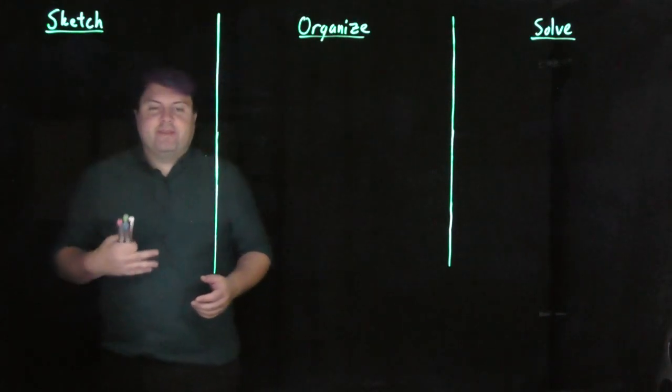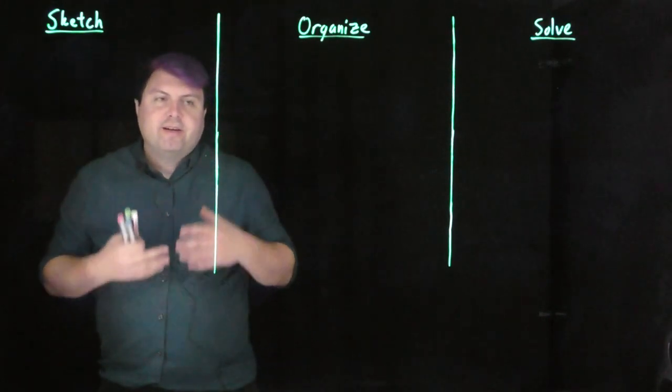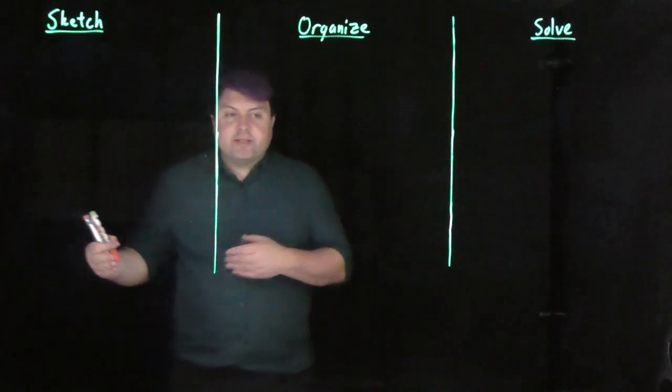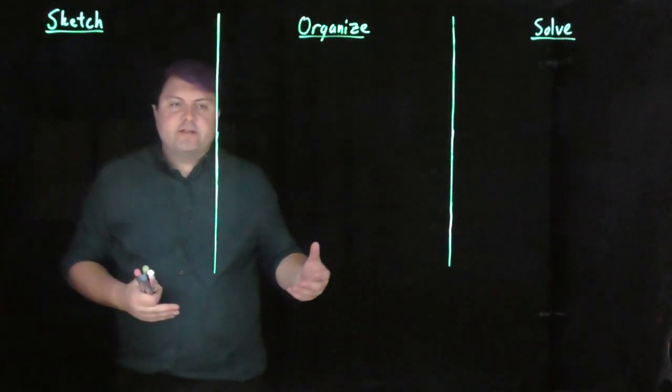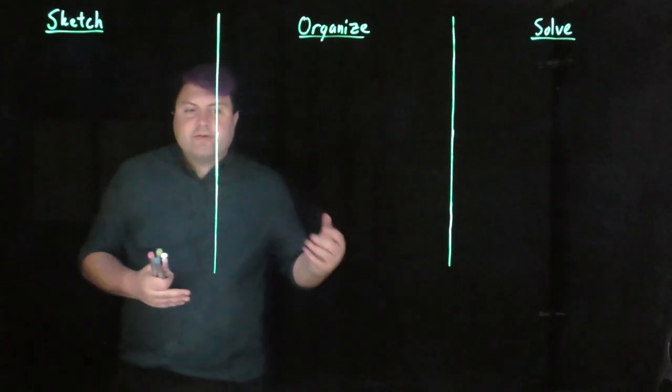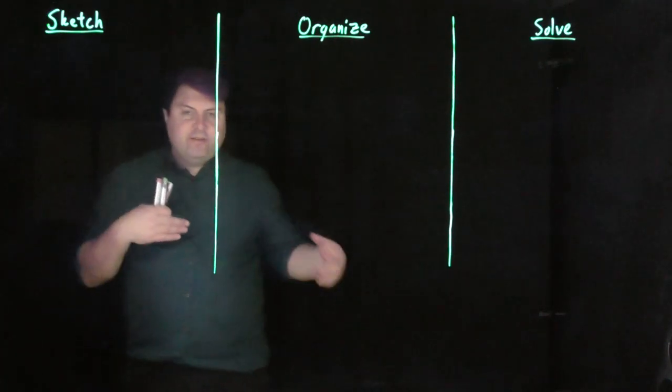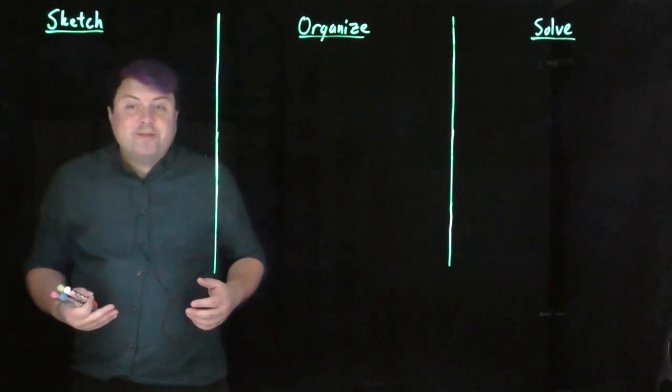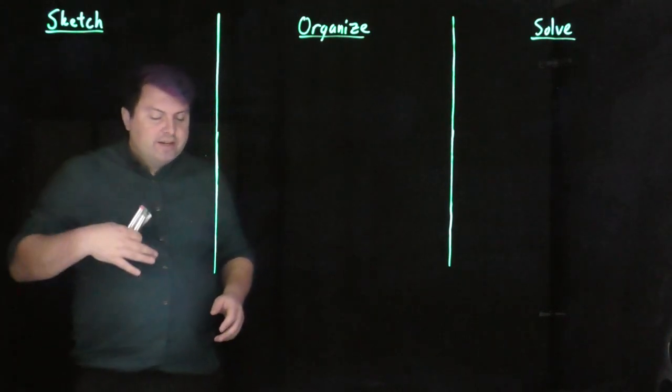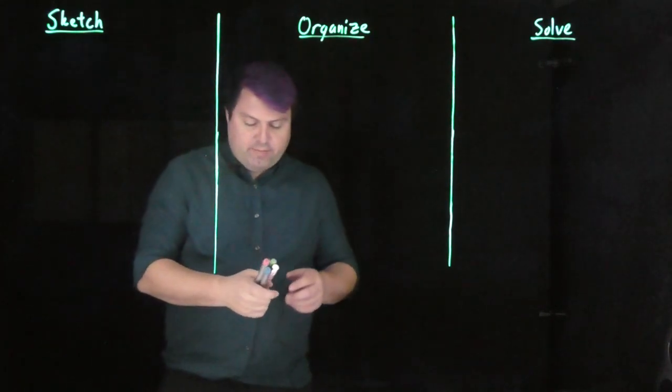One thing that's cool about this particular chapter is that it's a chance for us to revisit a previous chapter, Newton's laws, with an added twist. So we get a little bit of redemption arc if we didn't feel so good about it, but also if we do feel good about it, then we get to use the same stuff that we did, just extend that knowledge just a tiny bit.